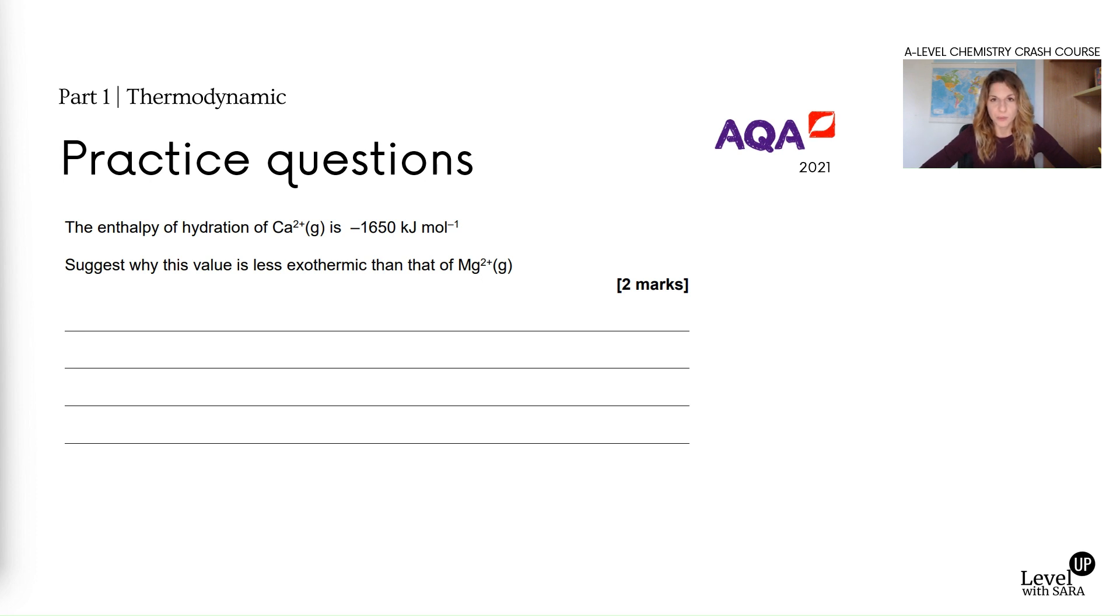This is the kind of suggestion thinking where this logic has to be applied. Explain why this value is less exothermic than magnesium two plus. If it's helpful, what you could do is also have the equation down, so density equals charge over volume. What is changing here? Periodic table of course. You can visualize calcium and magnesium. Calcium is bigger than magnesium, so it has a much bigger volume. What would happen to the density of calcium two plus? It's lower, which means weaker attraction.